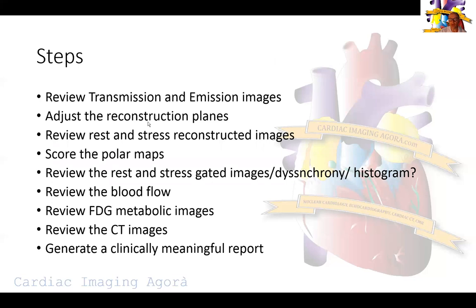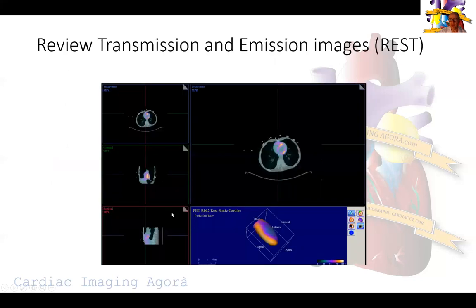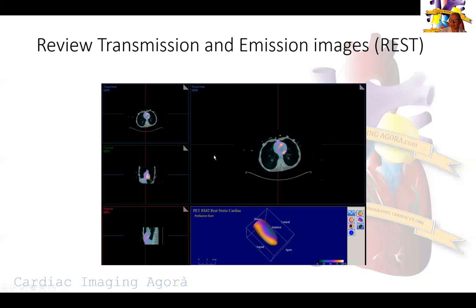We go through our step-by-step list of how we read this test. We start with the transmission images and work down step by step to generate a clinically meaningful report. This is a 63-year-old male — I usually like to read images independent of clinical history, though you're often not blinded to gender and age. This patient was referred for a rest, stress, and FDG PET — pharmacological PET.